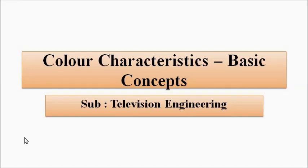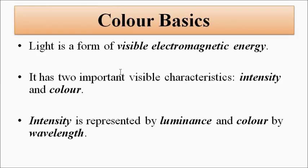So we know that light is a form of visible electromagnetic energy. The two most important visible properties or visible characteristics of light that have an impact in our day-to-day lives — why we are able to see various objects around us with different colors — it is because of two important properties: intensity and color, or wavelength. Different wavelengths correspond to different characteristics of each object.